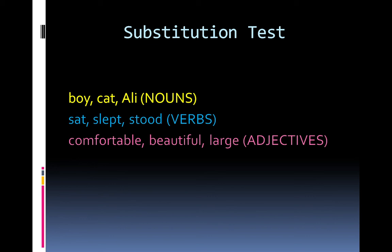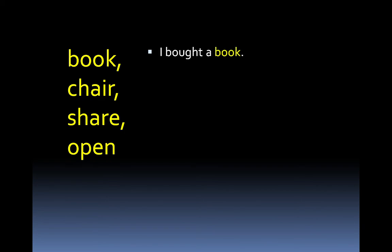It seems very simple that all words will be easily divided into groups just by looking at them, but it's not that simple. Look at this list of words. Many of you will say that 'book' and 'chair' are nouns, whereas 'chair' and 'open' are verbs. Now let's see how they are used in sentences. 'I bought a book' — here 'book' is a noun because it's the name of a thing. Now compare it with: 'We shall book two seats' — here 'book' has become an action word, so we call it a verb.